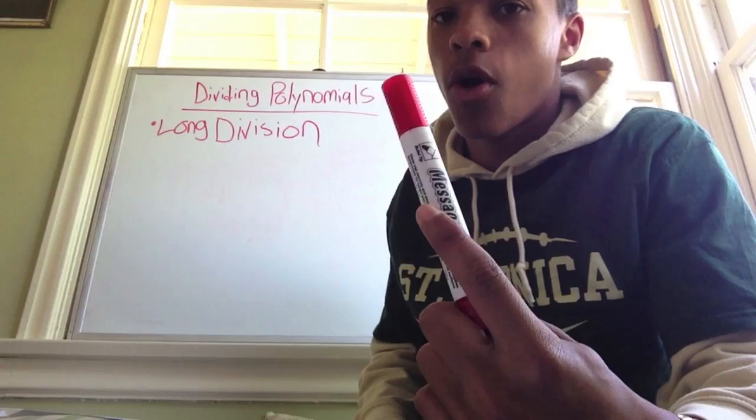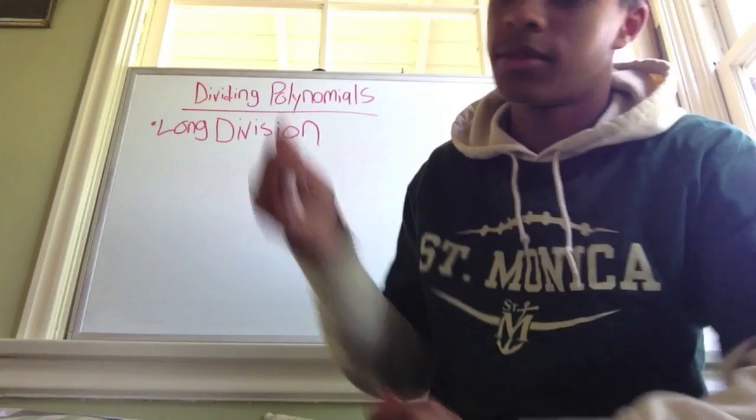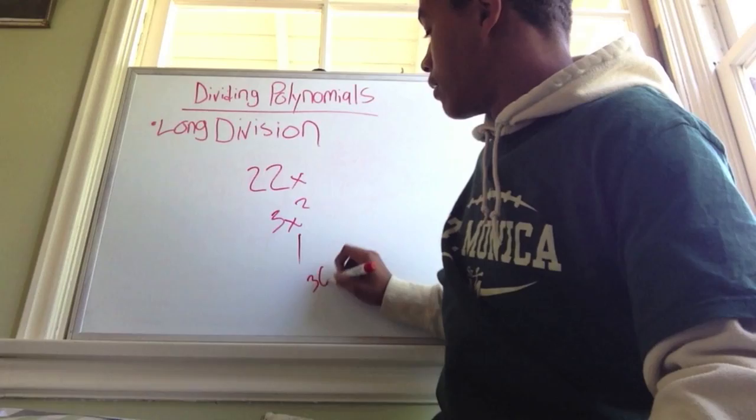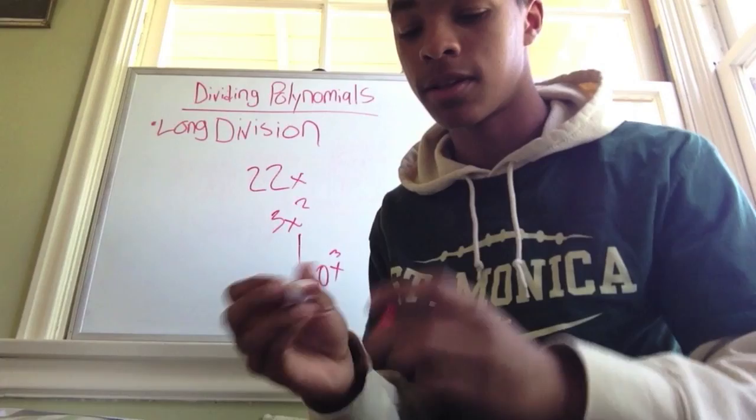First off, a monomial. A monomial is an algebraic expression consisting of one single term. A simple one would be 22x — that's a monomial. 3x squared is another one. 130x cubed is one too. The list goes on; there are many different ways.